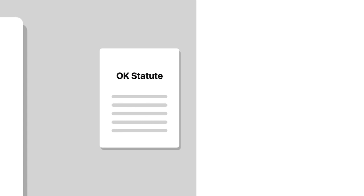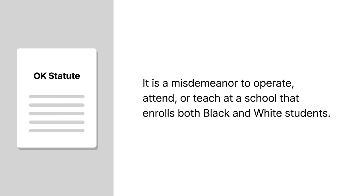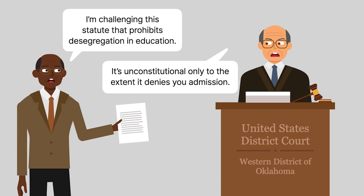A state statute made it a misdemeanor to operate, attend, or teach at a school that enrolled both Black and white students. McLaurin challenged the statute, and a federal district court ruled that it was unconstitutional to the extent that it denied McLaurin admission.